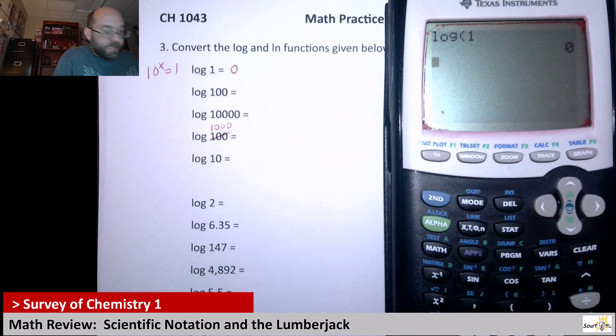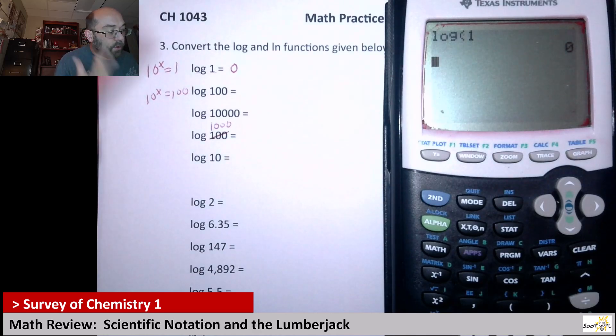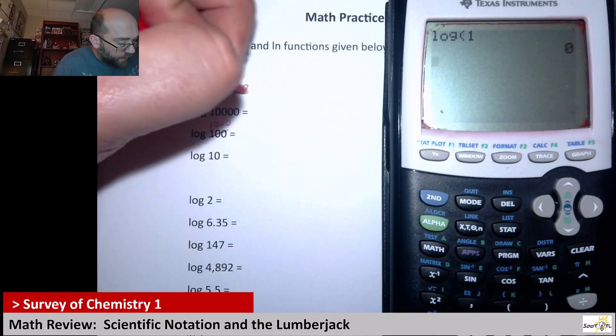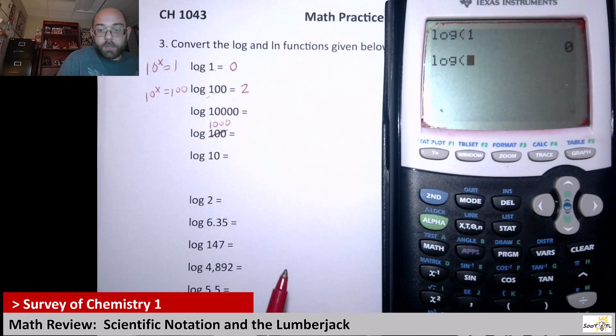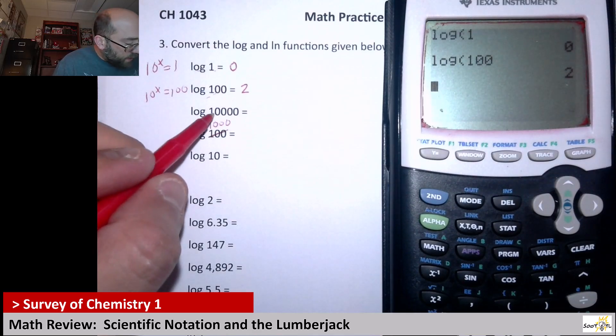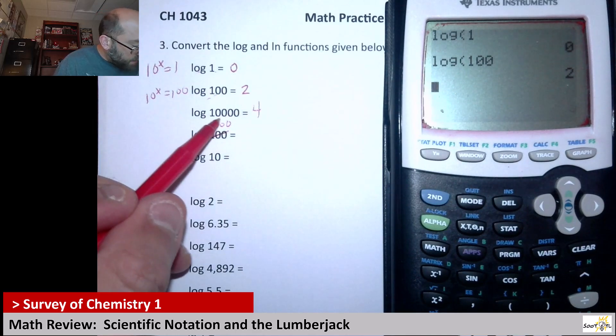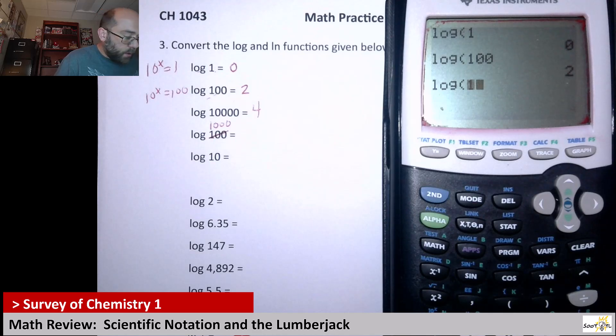Now, here you've got 10 to what power equals 100? Well, for log and these types of numbers, it's very easy. You just count the number of zeros. So here the answer should be 2. But just to kind of check it, if we say log of 100 and hit enter, I get 2. Here, I see 1, 2, 3, 4 zeros. So I know the log of 10,000 should be 4. But I'll show it on the calculator too. 1, 2, 3, 4 zeros. There you go.